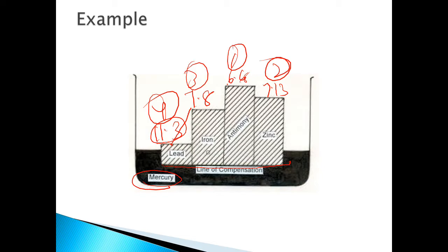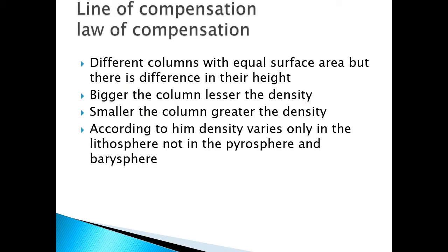Though the density varies for different elements, at the level of compensation they are equally spread. This is the law of compensation theory. Above the line of compensation there are density changes, but below the level of compensation there is no change in density.